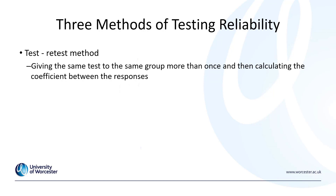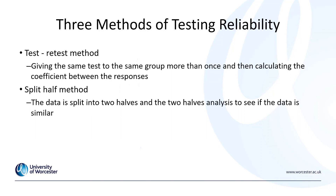Another common statistical test of reliability is the split-half method. Here we split the data into two halves and analyse them to see if the data is similar. If the data is representative, the scores of the first half should be similar to the second half. Of course, this assumes both halves of the data should be equivalent — if there are different characteristics such as geographical location between the two halves, we might not necessarily expect them to be similar.